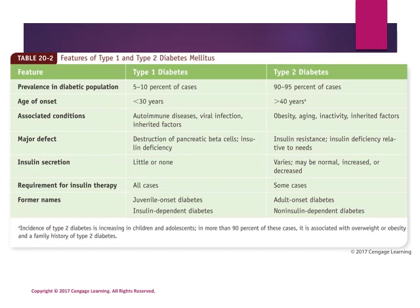Table 20-2 summarizes the features of both type 1 and type 2 diabetes mellitus. Among the diabetic population, type 1 accounts for 5 to 10 percent of cases, while type 2 accounts for 90 to 95 percent. Type 2 diabetes is associated with obesity, aging, inactivity, and inherited factors. If one or both parents have type 2 diabetes, you are more likely to have it. The major defect in type 2 is insulin resistance, where cells are not sensitive to the action of insulin, producing a relative insulin deficiency.